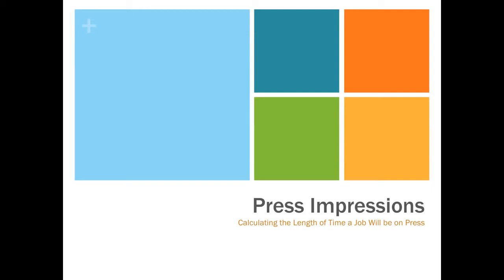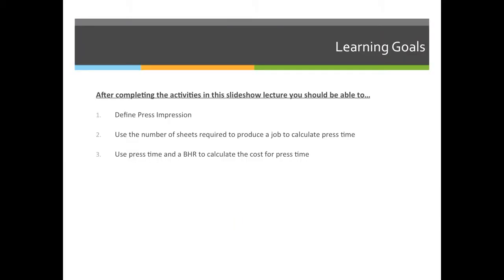We will calculate the length of time for a job based on how long it will run on the press. Our objectives for this lecture are: one, to define what a press impression is; two, to use the number of sheets required to produce a job to calculate press time; and three, to use press time and a BHR or a budgeted hourly rate to calculate the cost for press time.